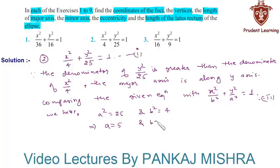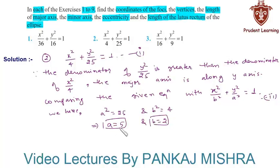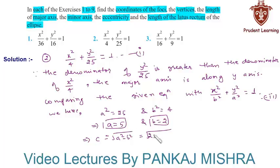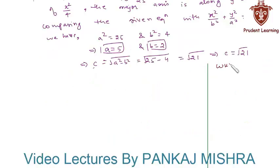This implies a = 5 and b = 2. We find c = √(a² − b²) = √(25 − 4) = √21. The foci of this ellipse are at (0, ±c) and vertices are at (0, ±a).